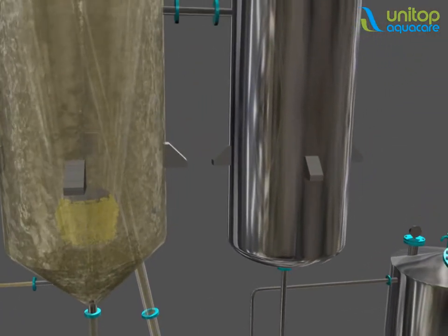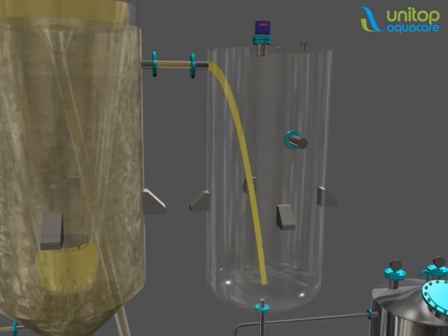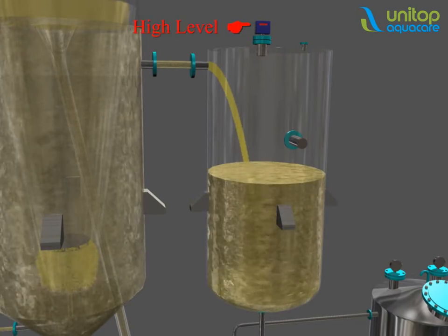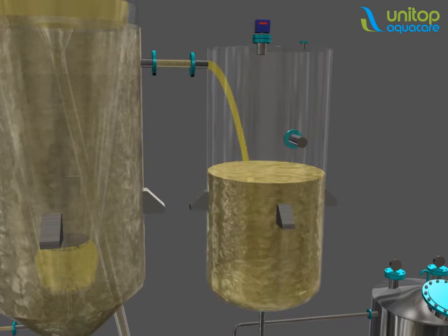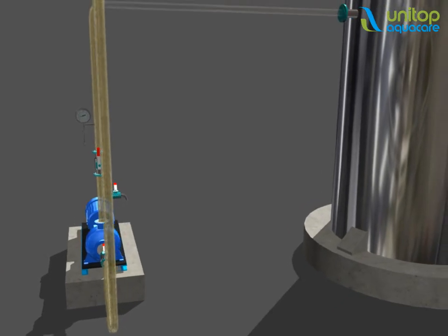Pure caustic is transferred to the holding tank, from where it is pumped to process with PLC operated level sensing devices.